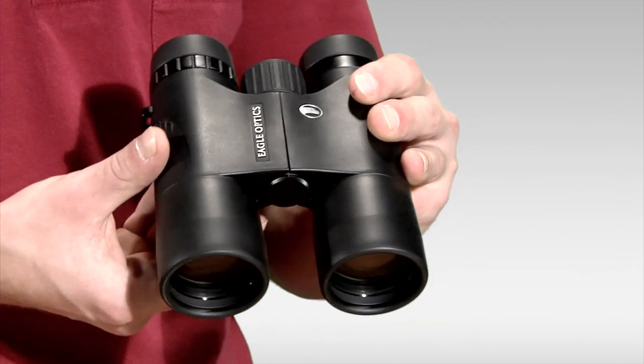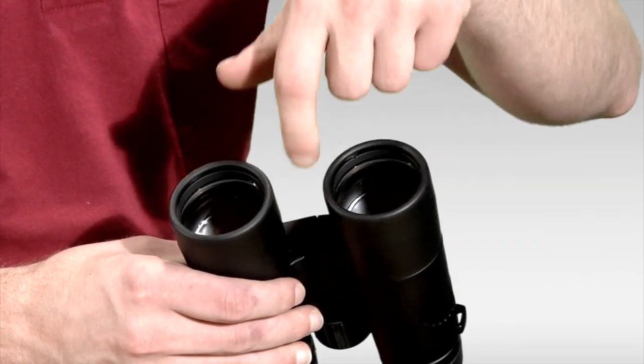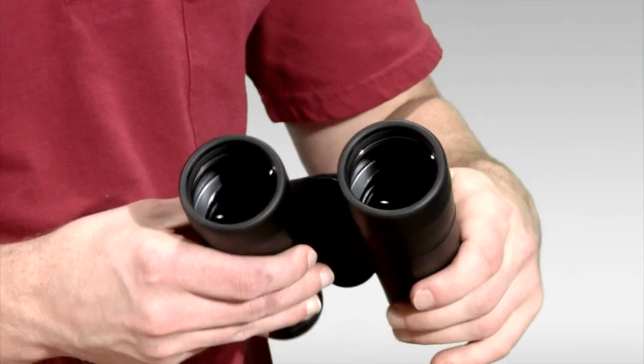In order to determine the size of the objective lens covers that you're going to need, you want to get a measurement of the outside diameter of the binocular.